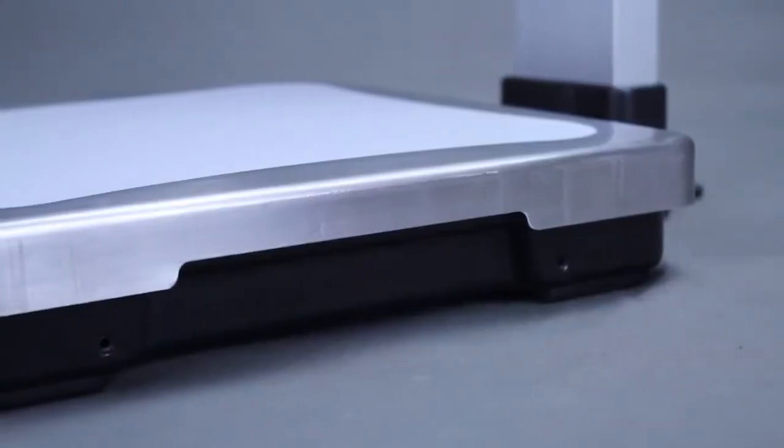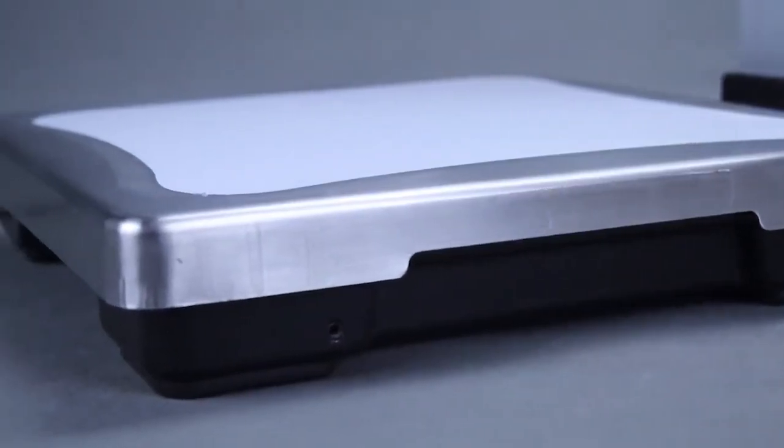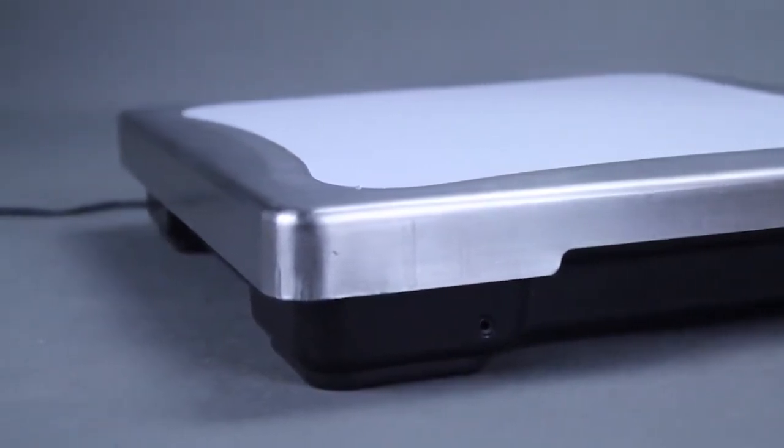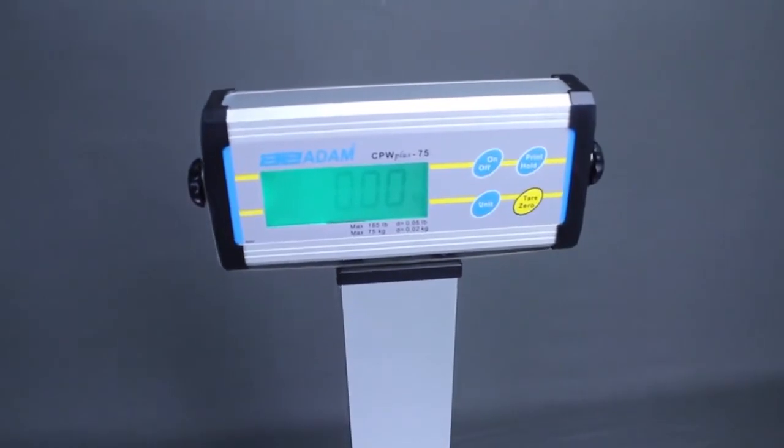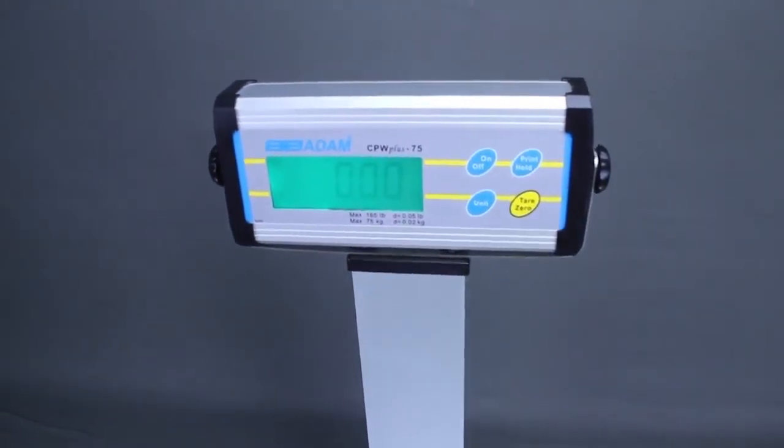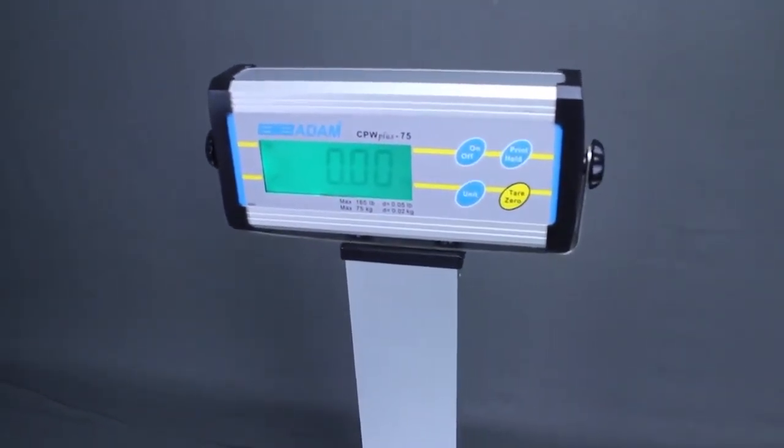The CPW Plus P bench scale meets weighing demands in most settings. With simple operation, rugged construction, and a stainless steel pan that's easy to wipe down, the CPW Plus P is an exceptional value.